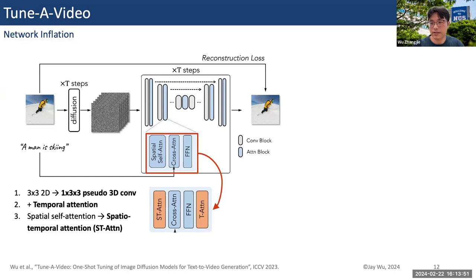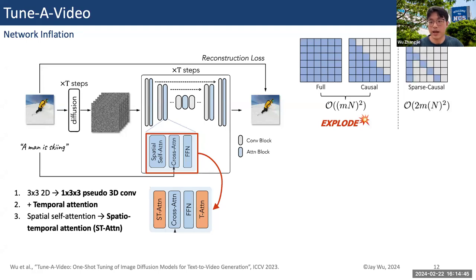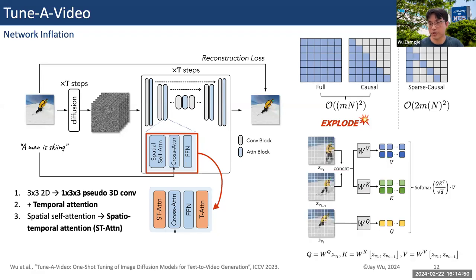We made modifications to the U-Net structure. We first inflate the 2D convolution to a pseudo-3D convolution and added temporal attention layers after the attention module. We also extend the spatial self-attention to spatial-temporal for better temporal content consistency. However, using full attention across the spatial-temporal domain or causal attention would cause a lot of computation cost, so we designed a much more efficient one called sparse causal attention. It only attends to the first frame and the previous frame to obtain necessary information.